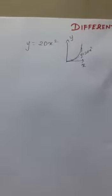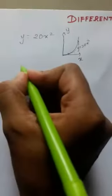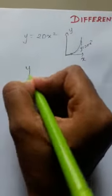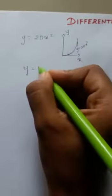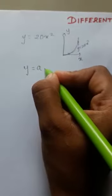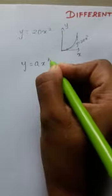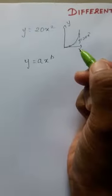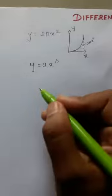Consider the general equation y equals a constant a into x to the power b. A constant a into x to the power b.